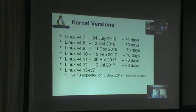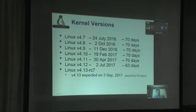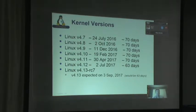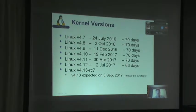Here are the kernel versions dating back to 4.7 in July of last year. They've been very consistent in their timing. In fact, 4.12 was only 63 days — I thought we were stuck on about 70 days. That shows the kernel development process is really quite consistent. We're currently on 4.13 RC7, and we're expecting 4.13 to be released on the 3rd of September, which would be another 63 days. We're continuing at a very good cadence.